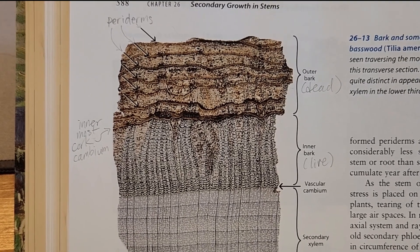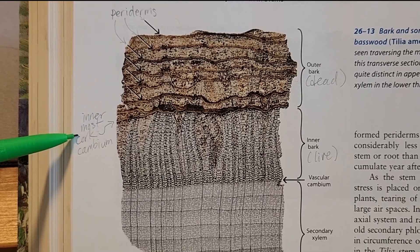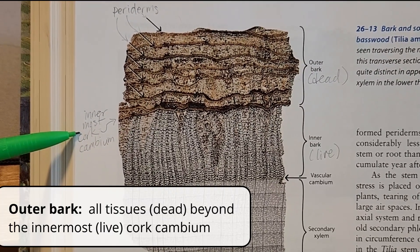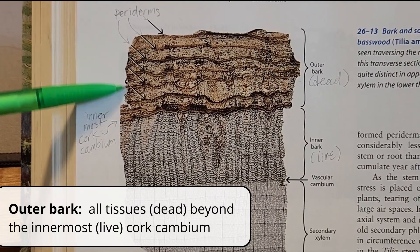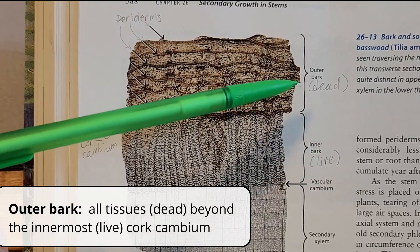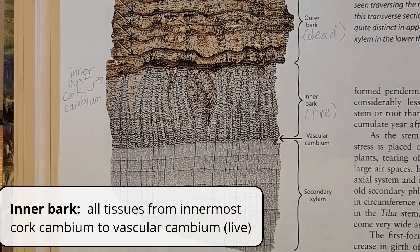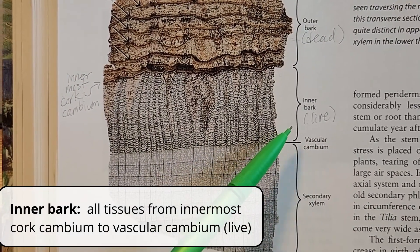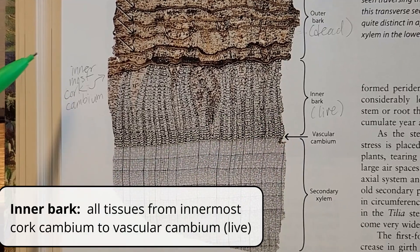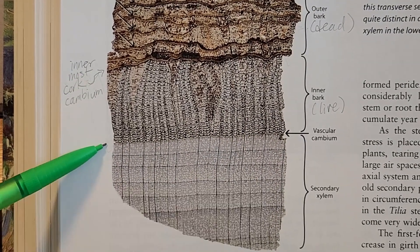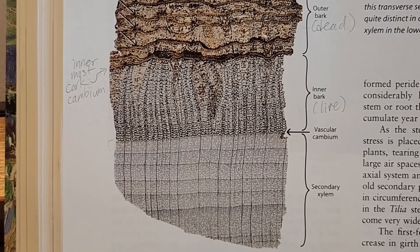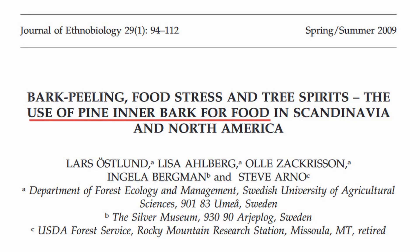Aside from that innermost cork cambium that's still alive, everything else is dead, and all of these dead tissues collectively make up the outer bark. You also have inner bark, which includes that live cork cambium all the way to the vascular cambium — all of these tissues are alive. This makes it more understandable why people eat inner bark in times of scarcity, because it includes the phloem and the sugars contained in the tree.